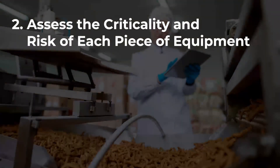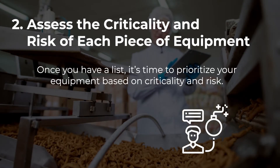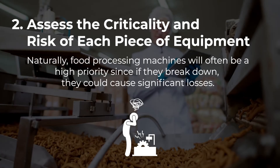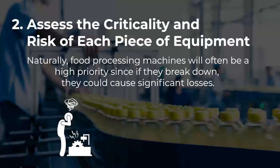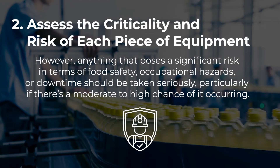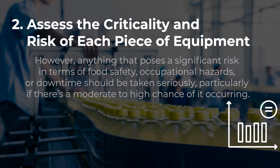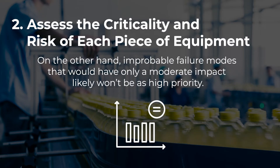Assess the criticality and risk of each piece of equipment. Once you have a list, it is time to prioritize your equipment based on criticality and risk. Naturally, food processing machines will often be a high priority since if they break down, they could cause significant losses. However, anything that poses a significant risk in terms of food safety, occupational hazards, or downtime should be taken seriously, particularly if there's a moderate to high chance of it occurring. On the other hand, improbable failure modes that would have only a moderate impact likely will not be as high priority.